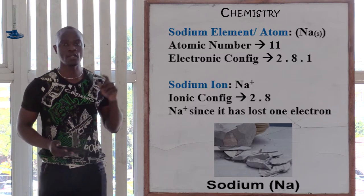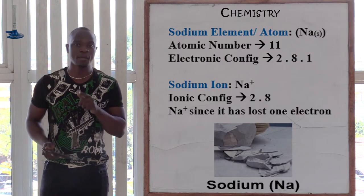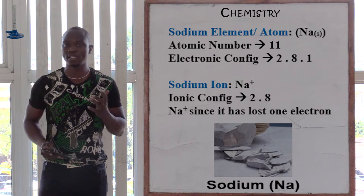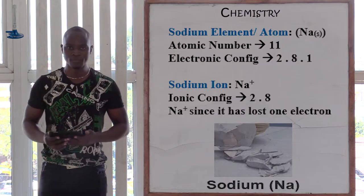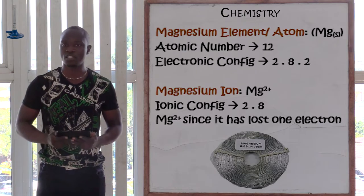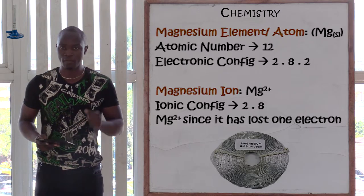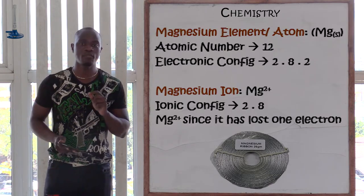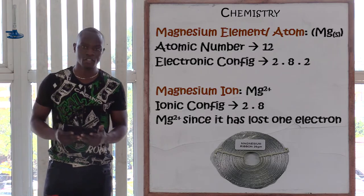This is how you represent the sodium ion. The electronic configuration of sodium ion is 2,8, and you write the symbol Na with a plus on top. Now let's look at another element: magnesium, which is atomic number 12. Magnesium's symbol is written as Mg with the state symbol of solid. The electronic configuration of magnesium is 2,8,2.